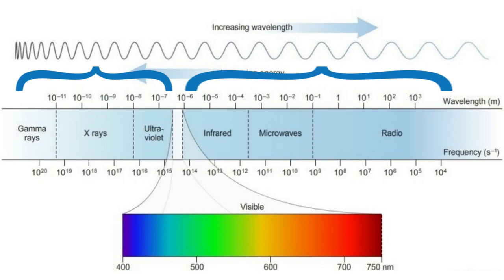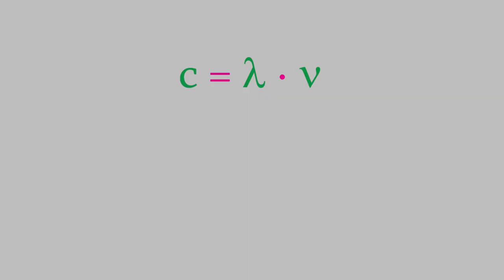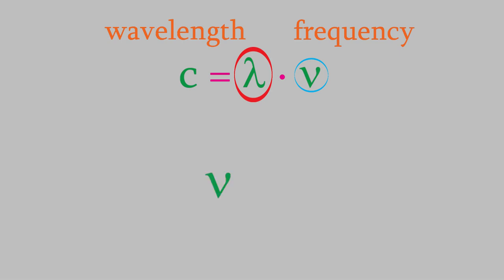You might also remember that the wavelength and frequency of a photon are connected by this equation, where the wavelength has the symbol of the Greek letter lambda, and the frequency is the Greek letter nu. It's important to make a distinction between this symbol and the letter v, which we usually use for velocity.